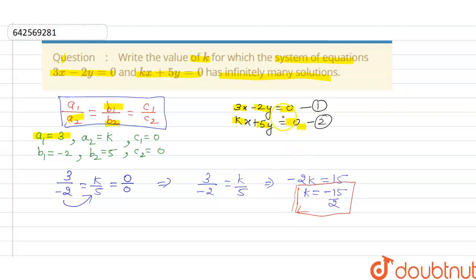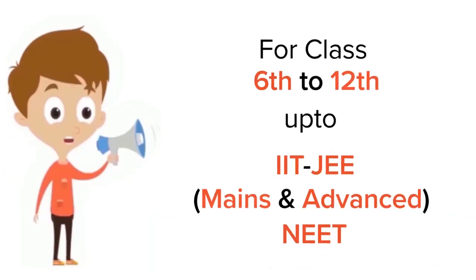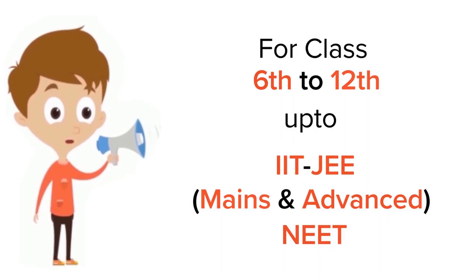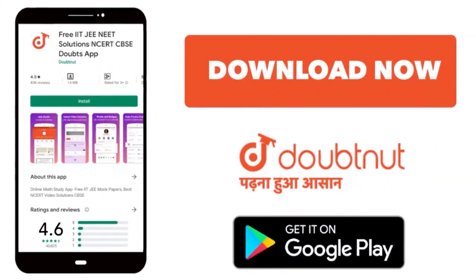This is the value for the system of equations 3x minus 2y and kx plus 5y equals 0 to have infinitely many solutions. Thank you. For class 6 to 12, IIT-JEE and NEET level, trusted by more than 5 crore students, download Doubtnet app today.